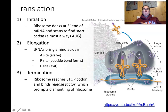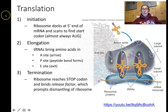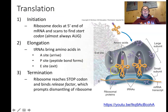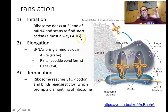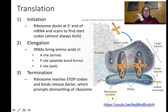Translation follows the same three steps as transcription: initiation, elongation, and termination. At initiation, the ribosome docks to the start codon (AUG). During elongation it reads the mRNA, translating codons into an amino acid sequence. Termination occurs when the ribosome reaches a stop codon — equivalent to the terminator in transcription — and stops adding amino acids.